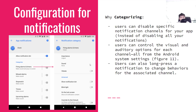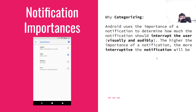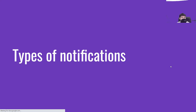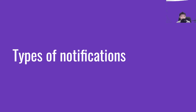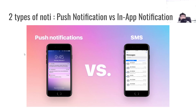There are three categories of importance, and they determine the level of interruption to the user. Next we will look at the types of notification.